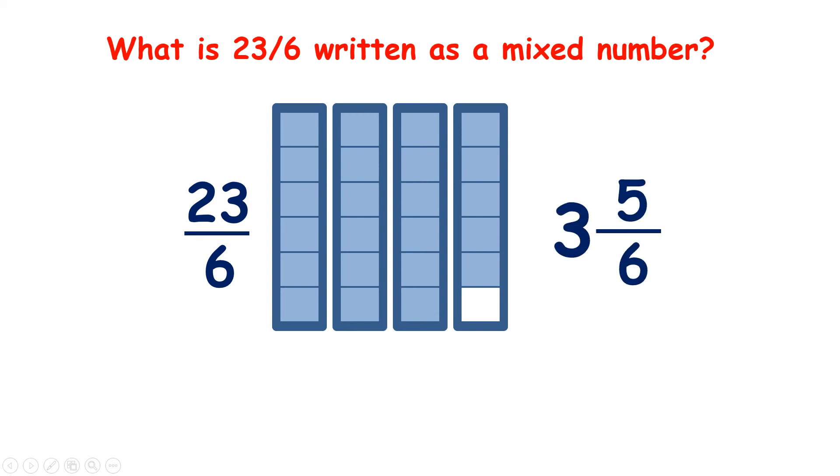So we have 3 whole bars, and then we have 5 sixths of another bar. So as a mixed number, 23 sixths is the same as 3 and 5 sixths. But rather than drawing out bars, we can work it out by dividing 23 by 6. It gives us 3 remainder of 5.